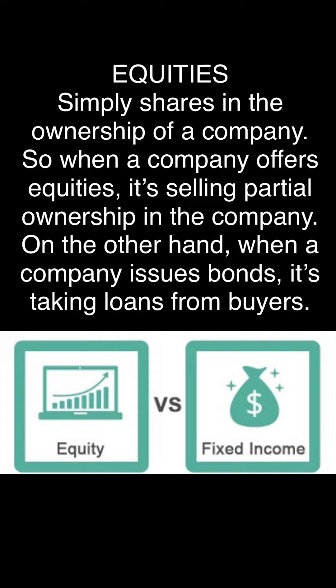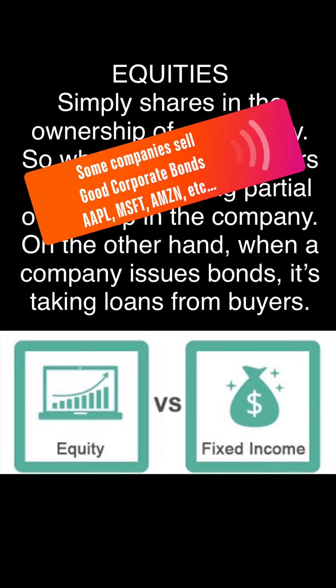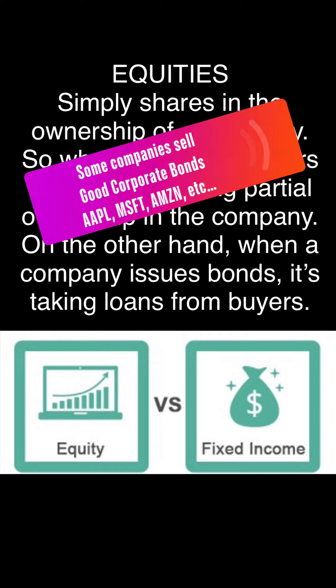Equities are quite simply shares and ownership of a company. When a company offers equity, it's basically selling partial ownership of the company. On the other hand, when a company issues a bond, it's really taking a loan out from the buyers — because remember, you're buying the debt when you're buying bonds. Some good companies offer corporate bonds, like Apple, Microsoft, and Amazon. If you're going to buy their bond or buy their debt, you want to make sure that the company is sound fundamentally and that in the future they're going to grow and not bottom out.